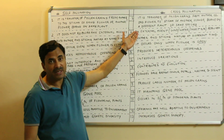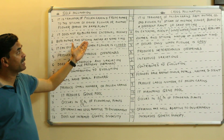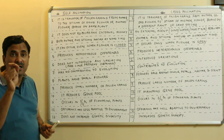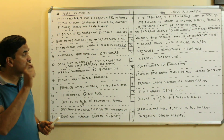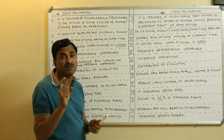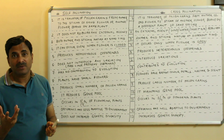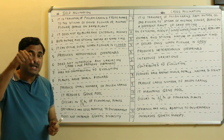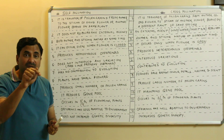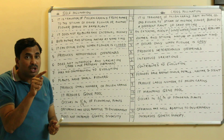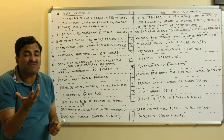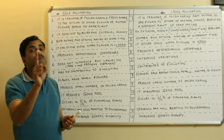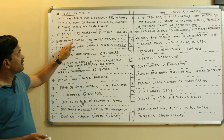Third point: for self-pollination, both anther and stigma must mature at the same time — homogamy must be present. Even in a bisexual flower, self-pollination is not guaranteed; the anther and stigma must mature simultaneously. If dichogamy is found — meaning they do not mature at the same time — then even in a bisexual flower, self-pollination will not occur and cross-pollination will occur instead.